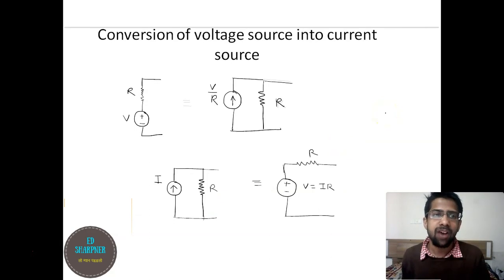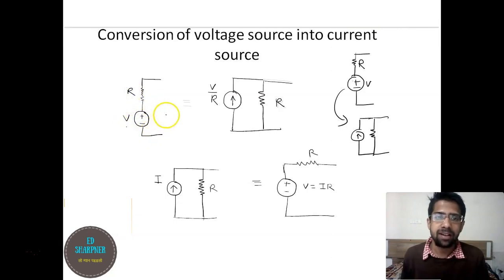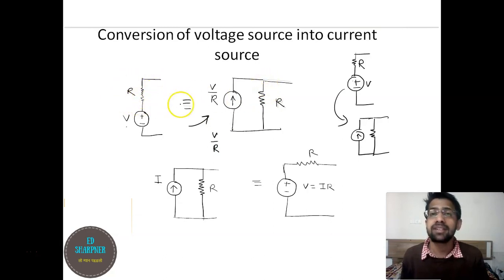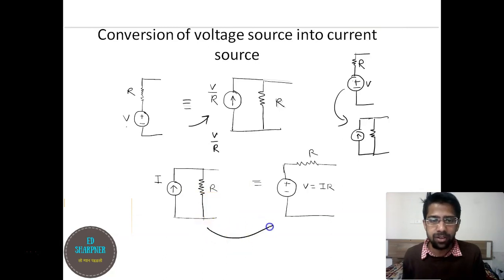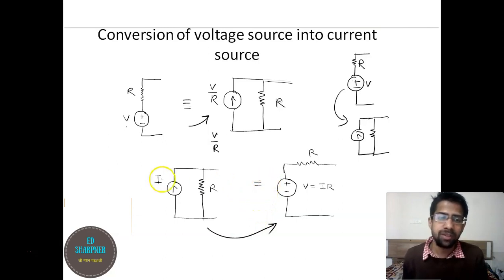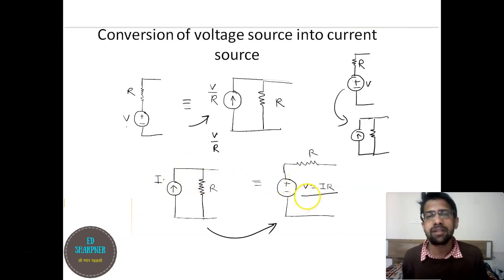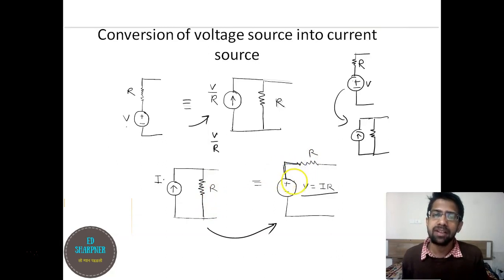For source transformation from voltage to current: if you have voltage source v in series with resistance r, the equivalent current source value is v/r, with resistance r placed in parallel. Conversely, if you have a current source with resistance r in parallel and need to convert to a voltage source in series with resistance, multiply i and r to get the voltage: v = i·r, and the parallel resistance is placed in series with the formed voltage source.